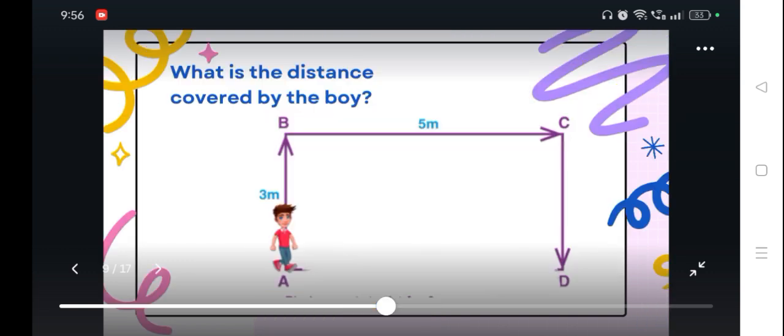In our next scenario, we have here a boy that walks point A to point B for 3 meters, and then from point B to point C for another 5 meters, and next from point C to point D. At that point, when the boy is at point D, question: what is the distance covered by the boy?